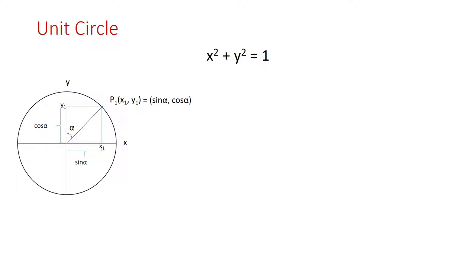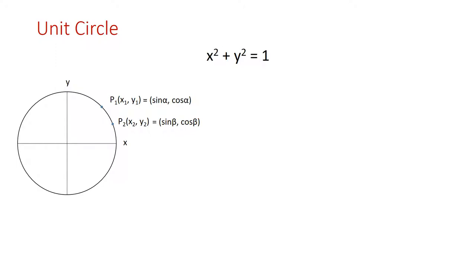In this case, y1 becomes cosine alpha and x1 becomes sine alpha, so we can express the coordinates of P1 as (sine alpha, cosine alpha) instead of (x1, y1). Similarly, P2 is another point on the curve. Suppose the angle between the y-coordinate and P2 is equal to beta, so the coordinates of P2 can be written as (sine beta, cosine beta) instead of (x2, y2). P1 and P2 are known points, and we will find the point having angle alpha plus beta.